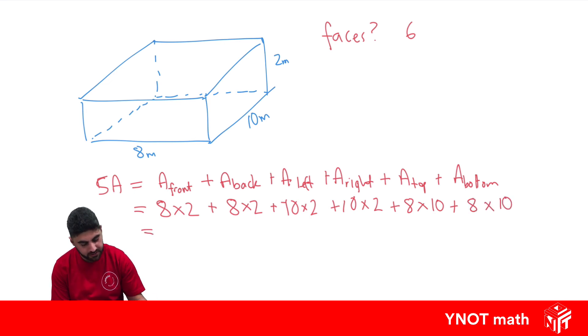Now all we have to do is work this out. So 8×2 is 16, 10×2 is 20, and 8×10 is 80. Adding this all together gives us 232 meters squared, because all we've done is take six areas, which is unit squared, and added them together.